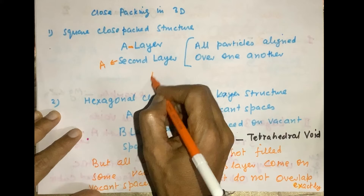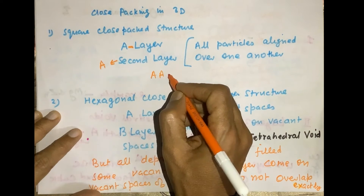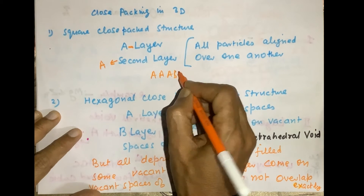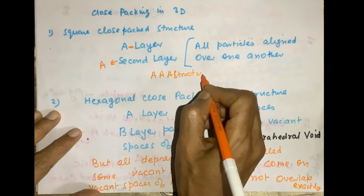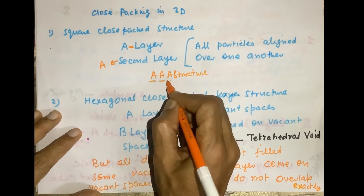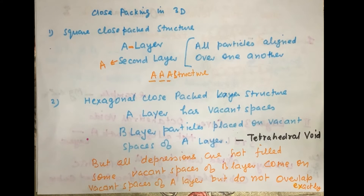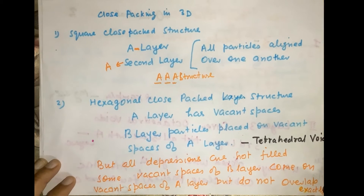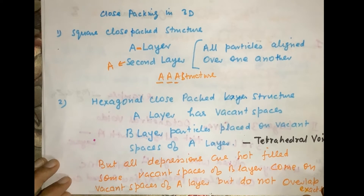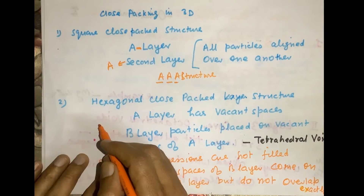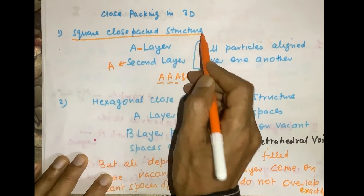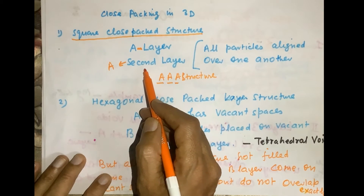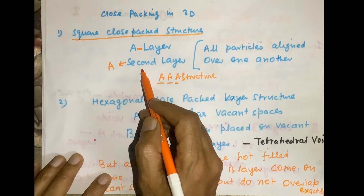This is called an AAA structure, meaning there is only one type of layer and all other layers are aligned with each other. This is the first method, called the square close packed structure, where the particles of all the layers are aligned.